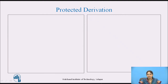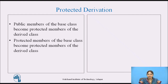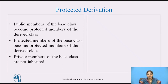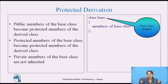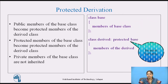In protected derivation, the public members of the base class become protected members of the derived class. Protected members of the base class also become protected members of the derived class. Private members of the base class are not inherited. The example shows how the derived class is defined with protected mode of derivation.